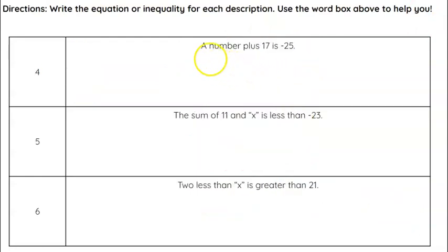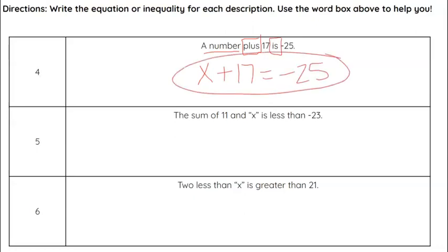Alright, three more examples here. A number, or a variable, plus 17 is negative 25. So a number, x plus 17, is equal sign, negative 25. Just like that. That's all we have to do. So I'd like you to try 5 and 6 on your own. Pause the video. And then you can resume the video to see if you got the answer correct.